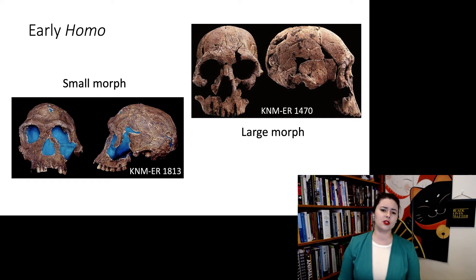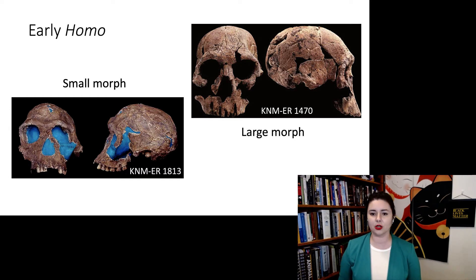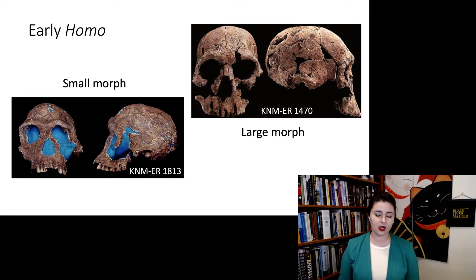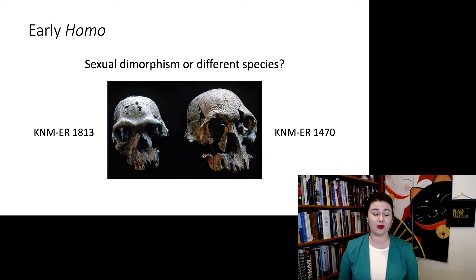So what's going on here? You might notice a few shape differences. The smaller individual has a slightly smaller brain, slightly smaller teeth, and a slightly smaller braincase. His brow ridges are actually larger relatively, and his face is a tiny bit more prognathic. But the larger individual has a much larger brain and a super flat face — not quite as much prognathism — with slightly larger posterior teeth and actually slightly smaller brow ridges. The question is: are these sexual dimorphism or different species? For a long time this debate raged on without much conclusion because we really only had one example of the large morph.